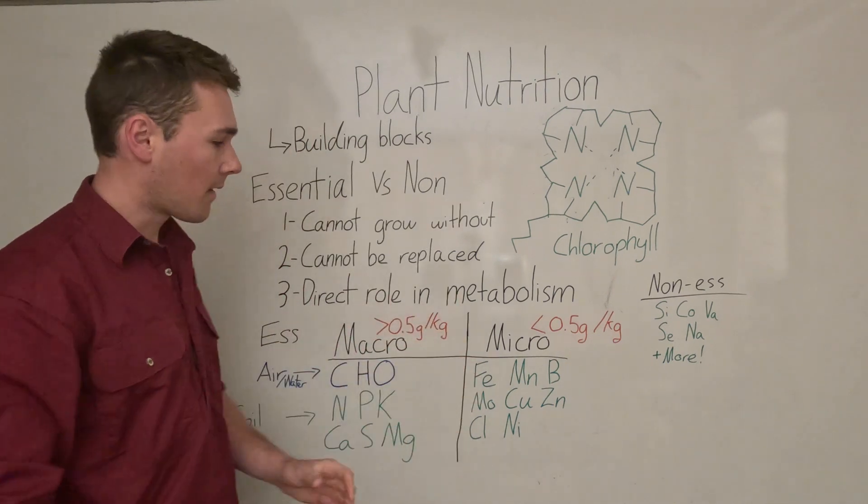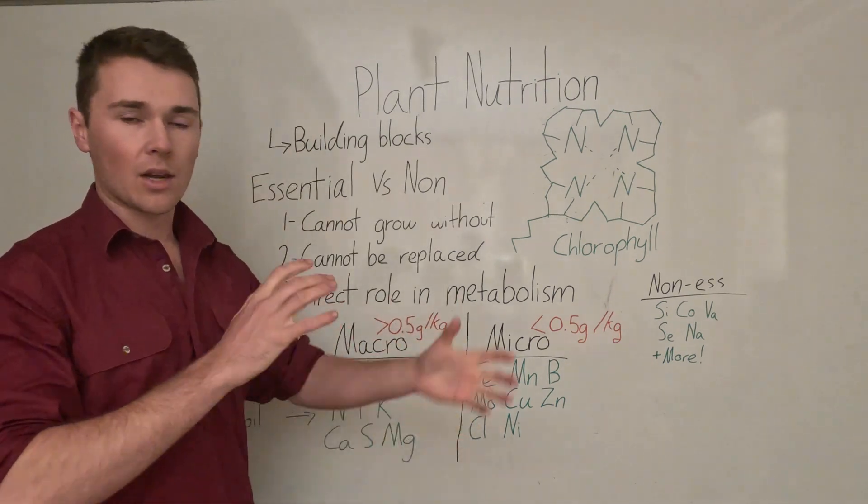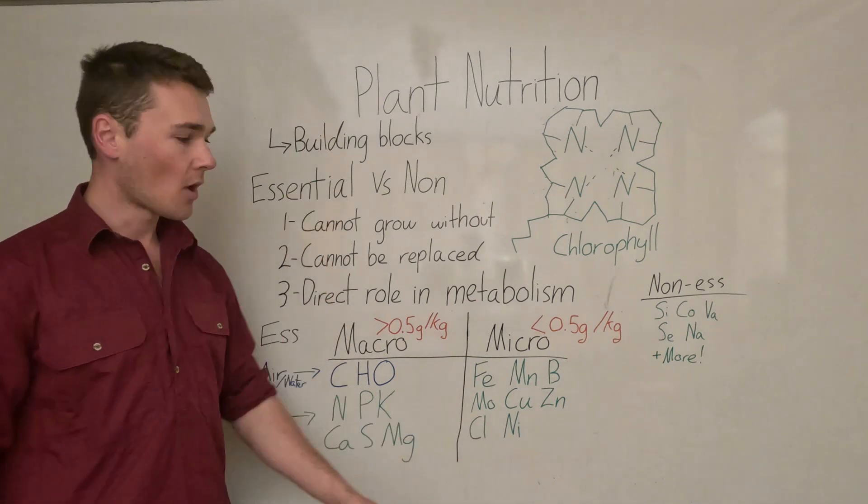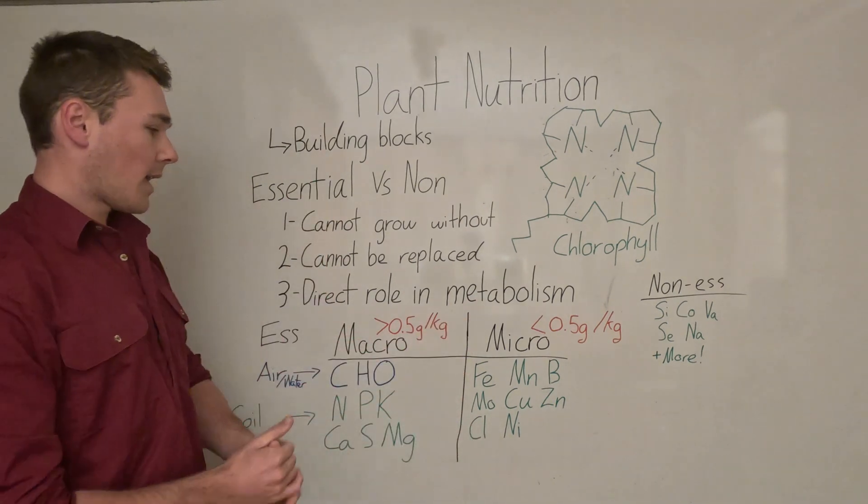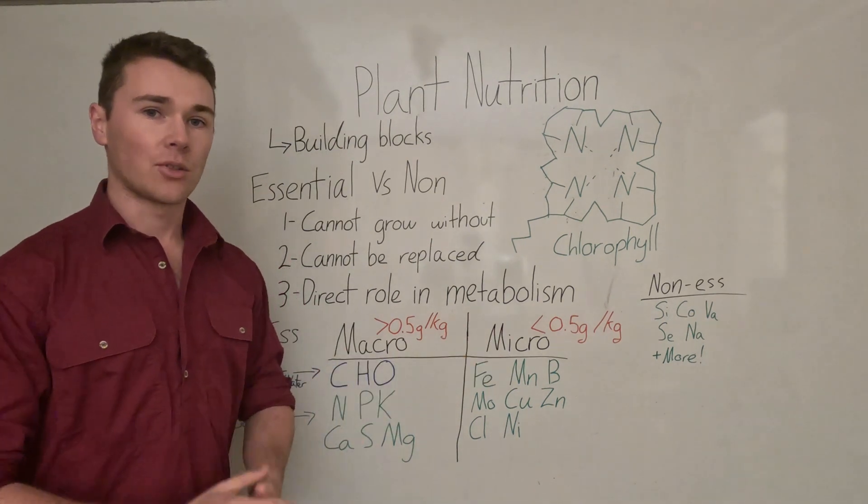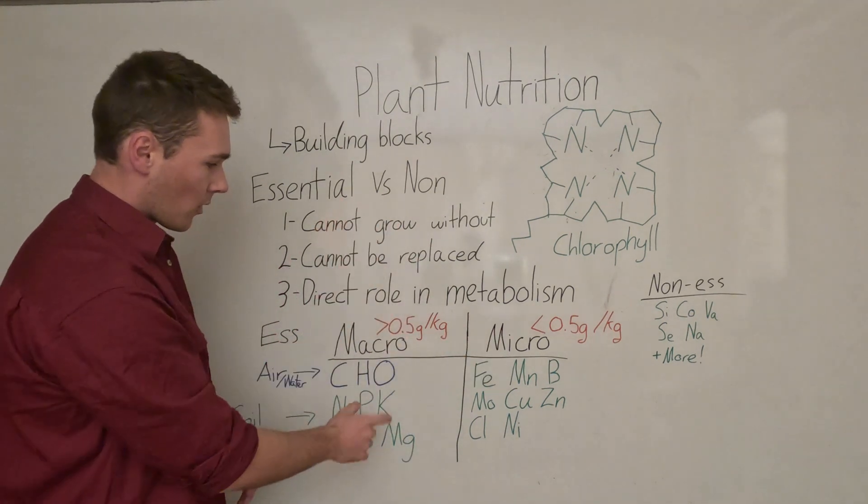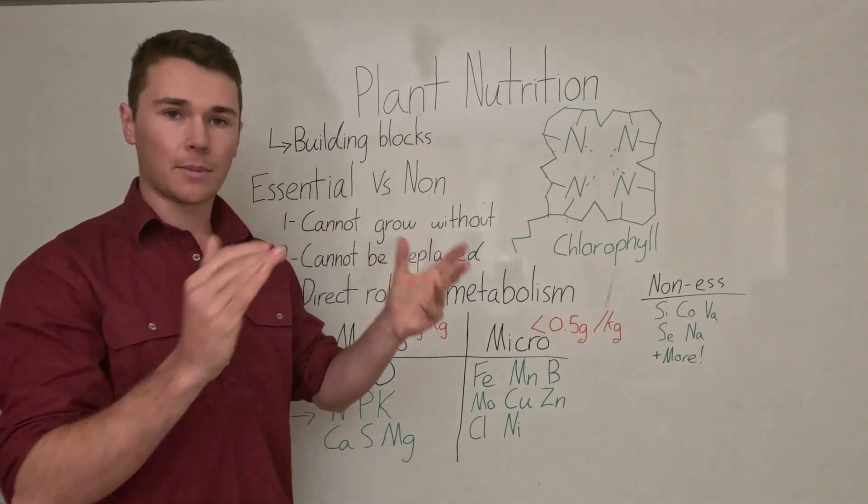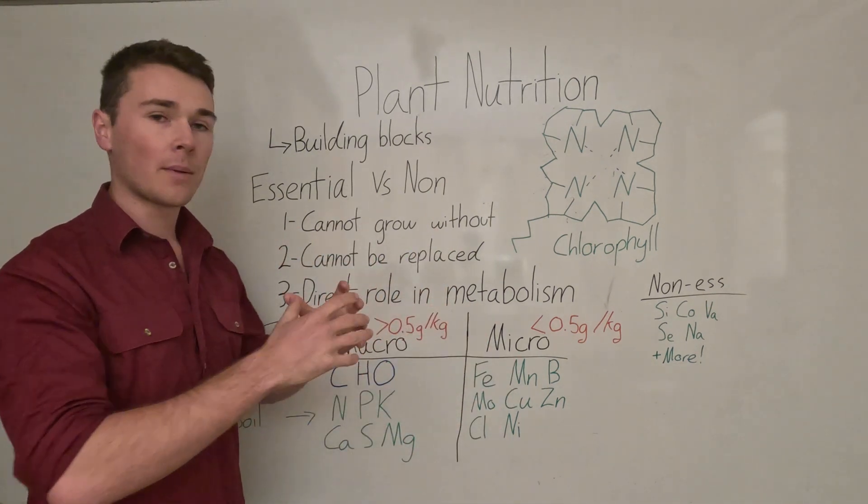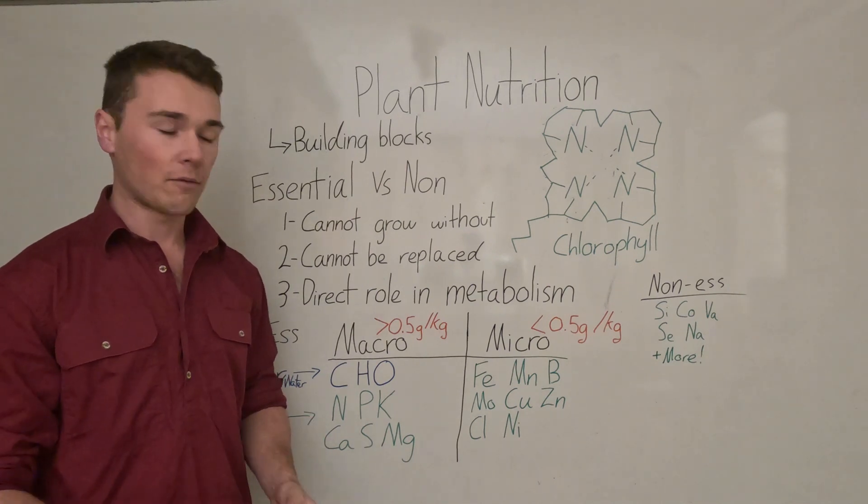Within that we have two main groups to categorize our plant nutrients: we have our macros and we have our micro plant nutrients, also called trace. Really the only difference between those is the amount that's used in the plant. Macros, if you draw out the plant and measure out how much of that nutrient there is, there's more than 0.5 grams per kilo of dry plant material.